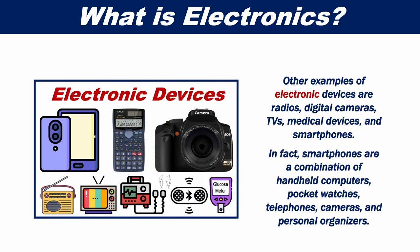Other examples of electronic devices are radios, digital cameras, TVs, medical devices and smartphones. In fact, smartphones are a combination of handheld computers, pocket watches, telephones, cameras and personal organizers.